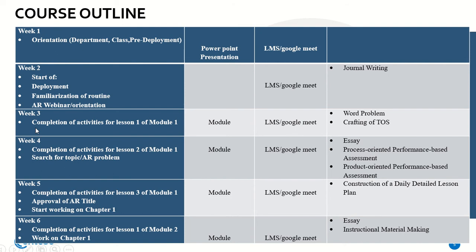For Week 3, you should have already completed your activities for Lesson 1 of Module 1, including the word problem and the crafting of the table of specifications. For Week 4, you need to complete Lesson 2 of Module 1 and search for a topic for your action research problem. For Week 5, you should have completed your activities for Lesson 3 of Module 1.